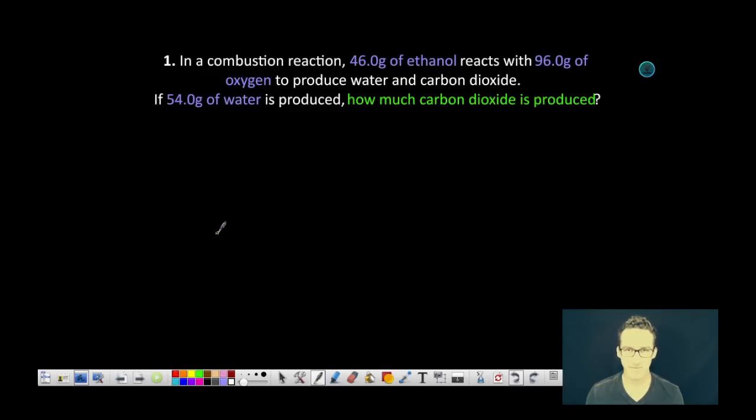In a combustion reaction, 46.0 grams of ethanol reacts with 96.0 grams of oxygen to produce water and carbon dioxide. If 54.0 grams of water is produced, how much carbon dioxide is produced?